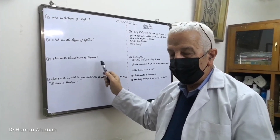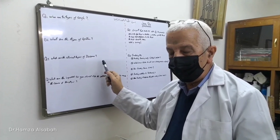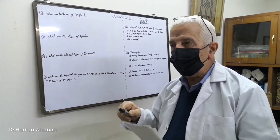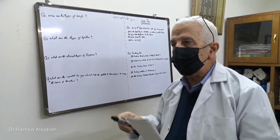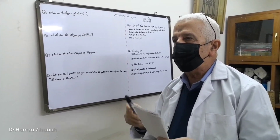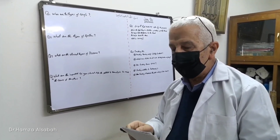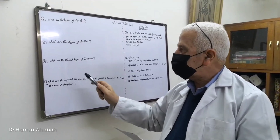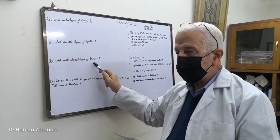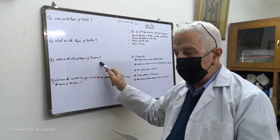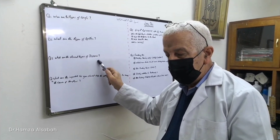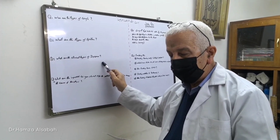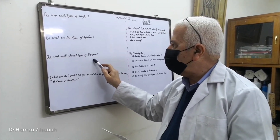Dyspnea occurring at night, one to two hours after sleeping, is paroxysmal nocturnal dyspnea. This is due to left ventricular failure, occurring when the pressure in the left atrium increases to more than 30 mmHg.